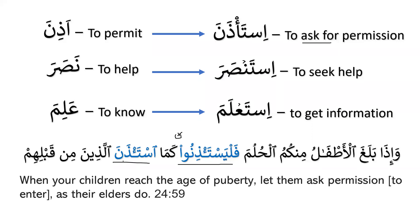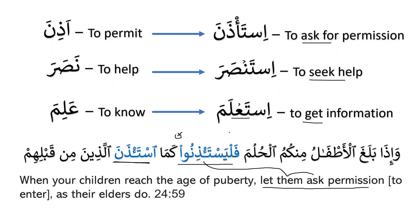The lam al-amr has different forms: li, fal, wal, thummal — all called lam al-amr. So fal yasta'dhinu, as we can see, this is past tense ista'dhana. When connected with min it becomes kama-sta'dhana alladhina min qablihim: 'When your children reach the age of puberty, let them ask permission to enter as their elders do.' Form 10 can mean to ask for something, seek something, or get information.